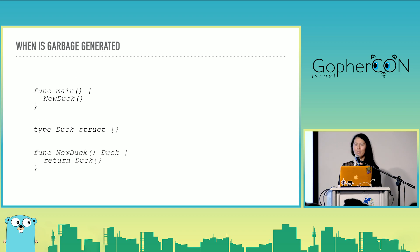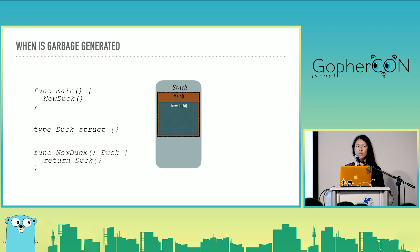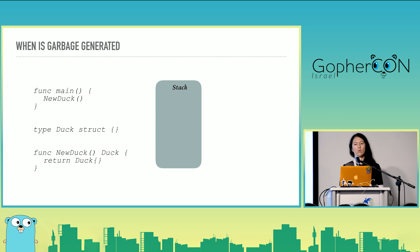Here is a trivial example. I have a struct that I'm returning. Each goroutine is allocated a user stack, and that stack will have a stack frame for main and a stack frame for new duck, which makes our duck object. When new duck returns and then main returns, that duck object goes away. Stack allocation is cheap and simple — in this case there's no heap allocation and those objects clean themselves up.